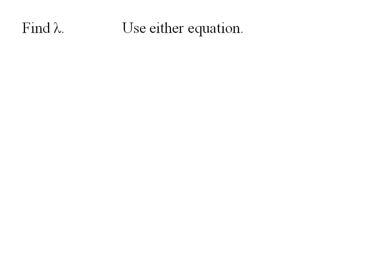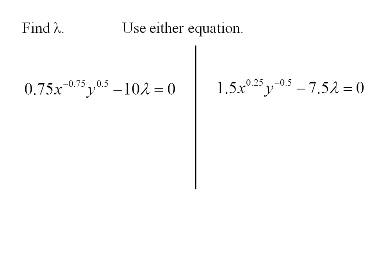The one remaining thing to do is to find lambda. When my constraint changes by $1, how much does total utility change? Now we could use either equation that contains lambda in order to do this. On the left-hand side, I've just rewritten the partial derivative with respect to x. I could equally use the partial derivative with respect to y, and that's what I've rewritten on the right-hand side here.